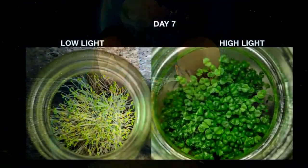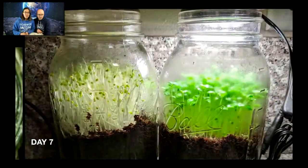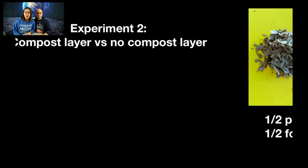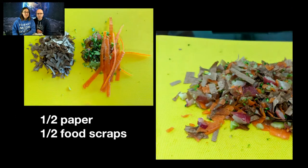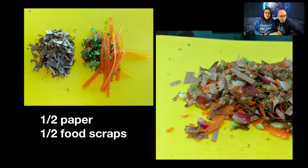My idea with making a compost layer was that plants growing on top of it would grow better than plants without one. Let's find out if my expectation matched my experiment results. Here is experiment two: compost layer versus no compost layer. My compost layer was half made out of brown recyclable paper and half made out of food scraps — carrot peels, grapes, and some broccoli that was starting to go bad.